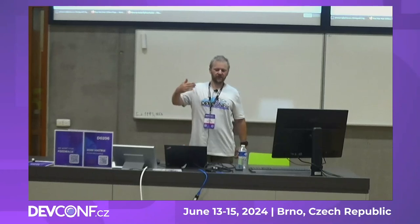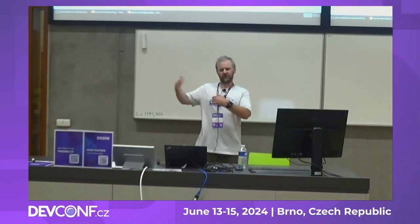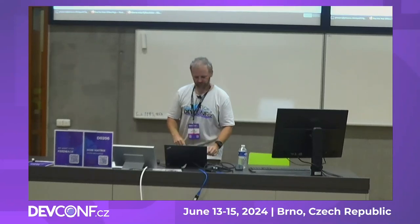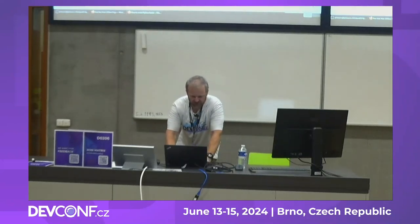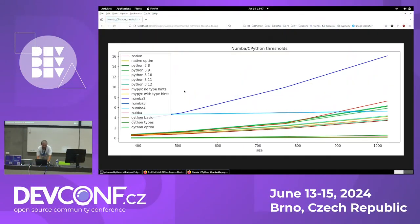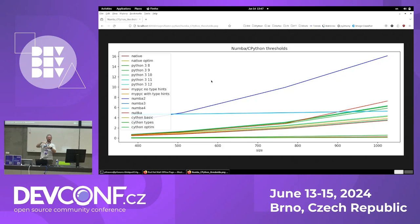If we don't measure startup time and just measure longer-running applications, Numba is good enough. There's a sweet spot for Numba — the bright blue line shows the Numba result. The startup time pushes the line up by about five seconds at the beginning, but then the performance is pretty good. So there are many points where Numba is better than MyPyC — definitely better for something that runs longer.